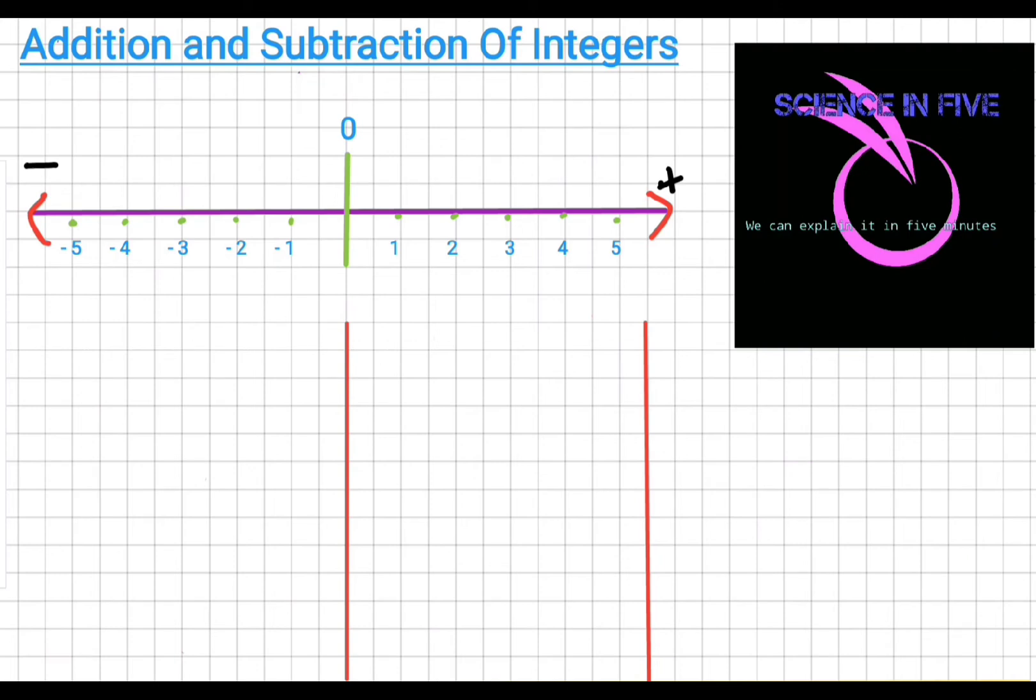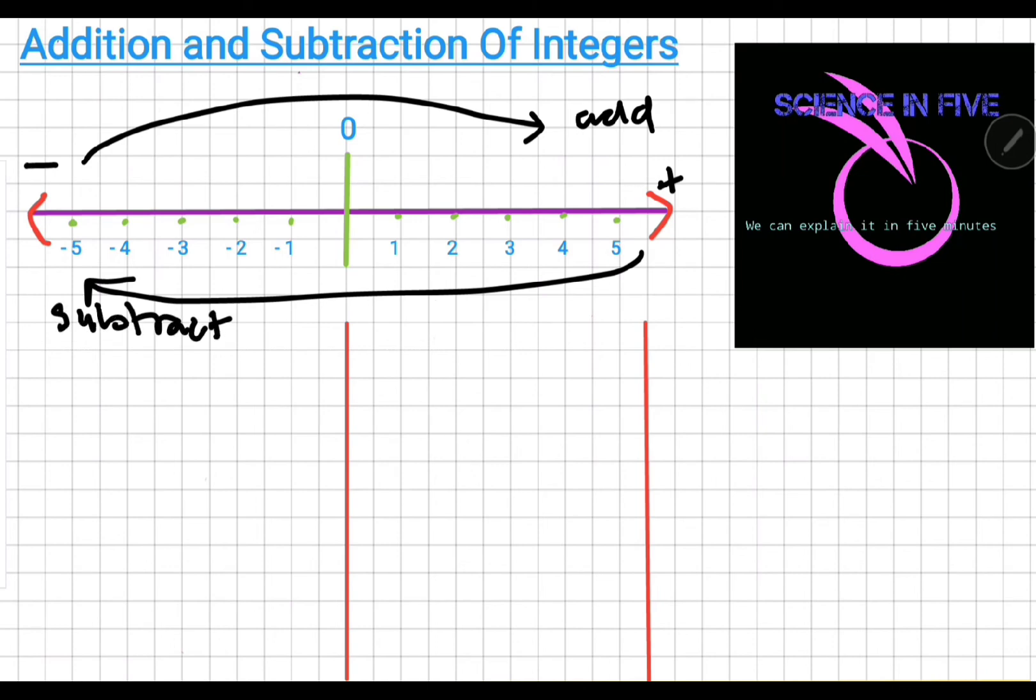When it comes to adding, when you add a number, you have to move to the right-hand side. So it doesn't matter whether you're starting from a negative number, but whenever you add, you have to move into the positive direction. When you subtract, similarly, you have to move into the negative direction. And again, it doesn't matter whether you start from a positive number or a negative number, you have to move backwards.